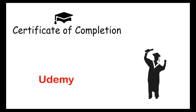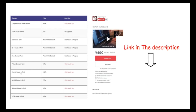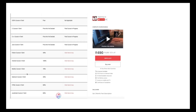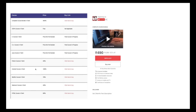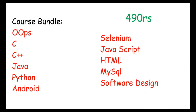I will mention details on the website. The course bundle costs 490 rupees and includes all courses. If you want individual courses like Python, Android, MySQL, etc., the total price is around 623 rupees. For example, the Android course individually is 199 rupees.